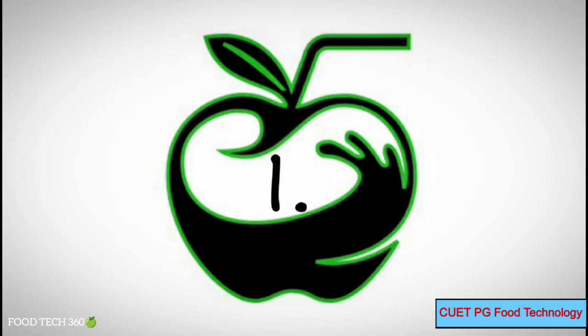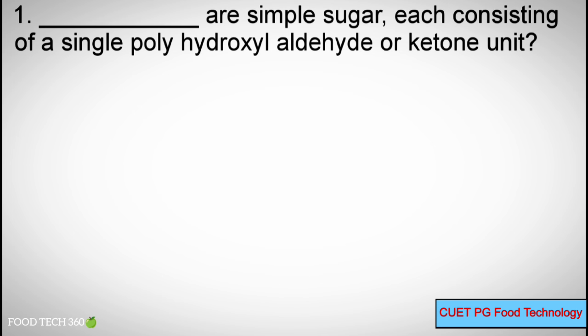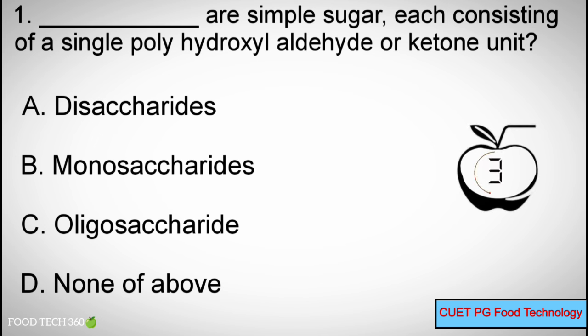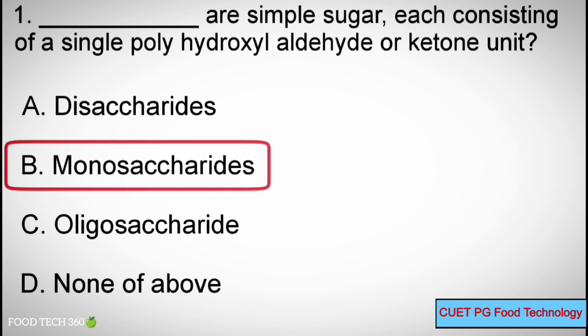Question number 1. Dash are simple sugars, each consisting of a single polyhydroxyl aldehyde or ketone unit. Options: A. Disaccharide, B. Monosaccharide, C. Oligosaccharide, D. None of the above. Correct answer: B. Monosaccharides.